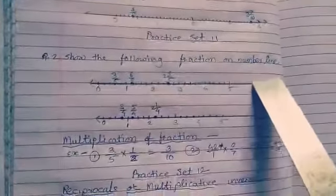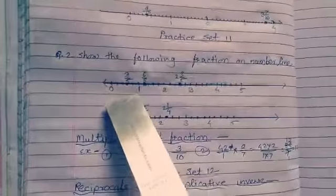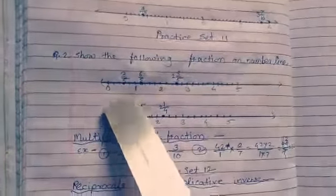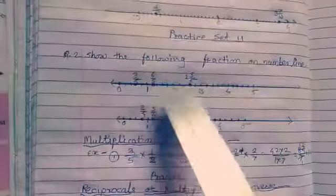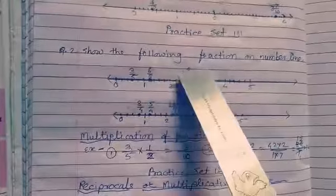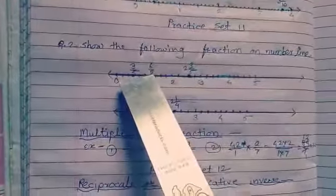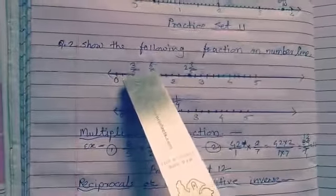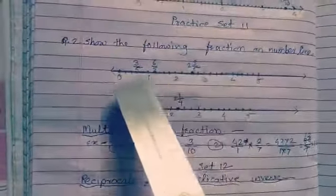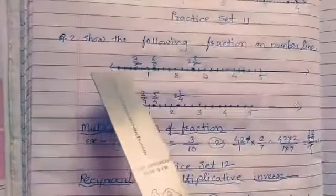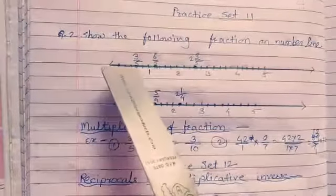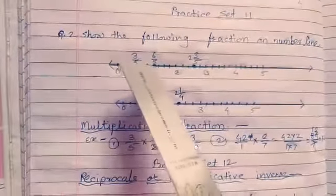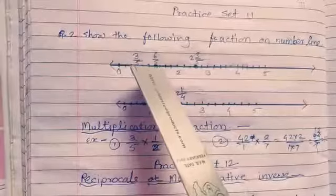Question number 2: Show the following fractions on a number line — 3 upon 5, 6 upon 5, and 2 and 3 upon 5. The denominator is 5, so we make 5 parts from 0. Counting: 1, 2, 3, 4, 5 — this is 1. Again 1, 2, 3, 4, 5 — this is 2.